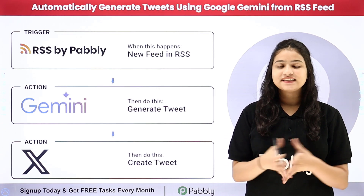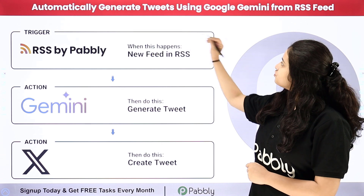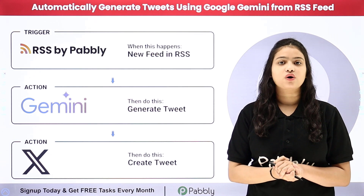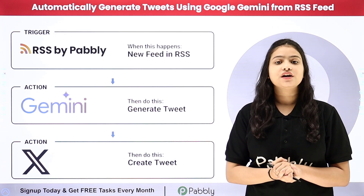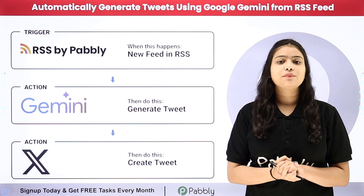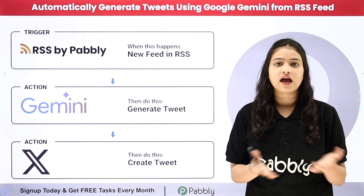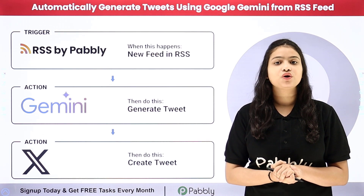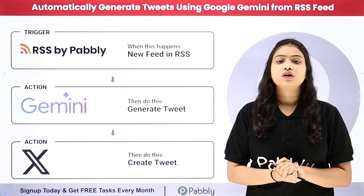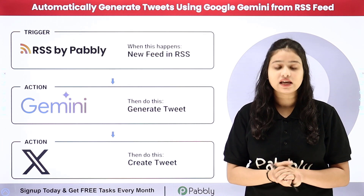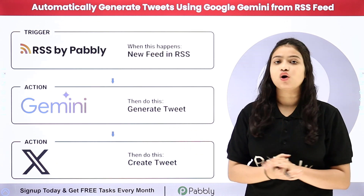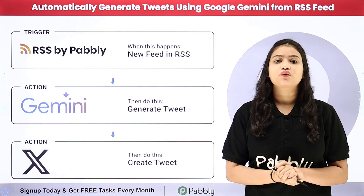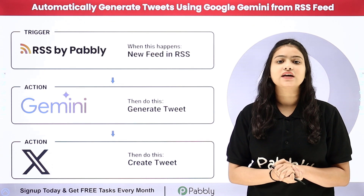Hello everyone, welcome back to Pabbly. In this video we are going to learn how to automatically generate tweets using Google Gemini from RSS feeds. I regularly want to update all my followers on X handle related to new technology news, so I am using RSS feeds. Whenever I receive a new feed from RSS by Pabbly, I want to convert that feed with Gemini into a suitable tweet and share it on my X handle. We are going to automate this entire process by setting up a connection between all these applications without any coding or programming skills, using Pabbly Connect.